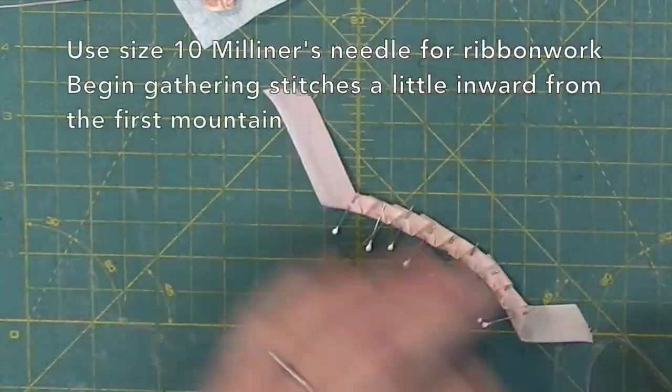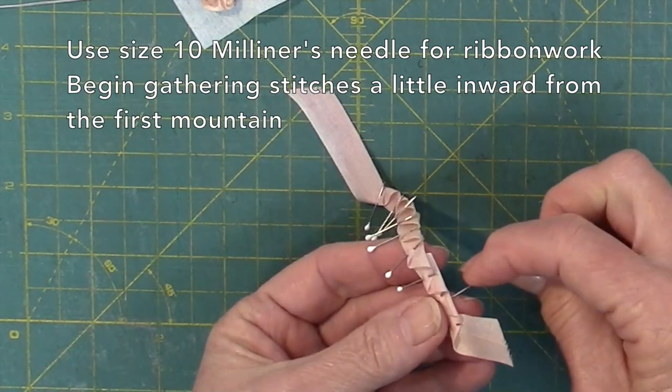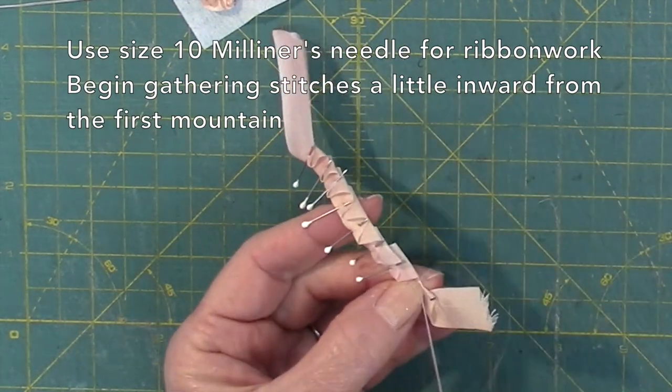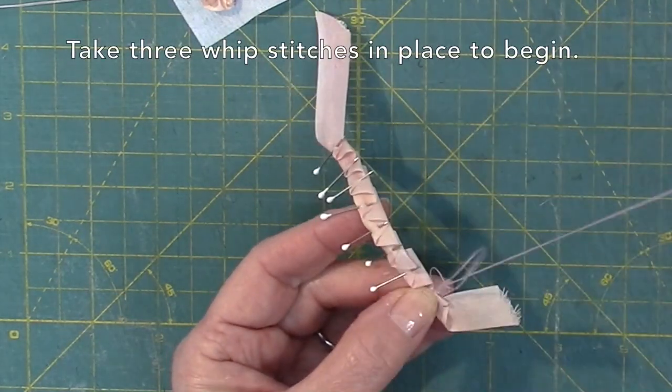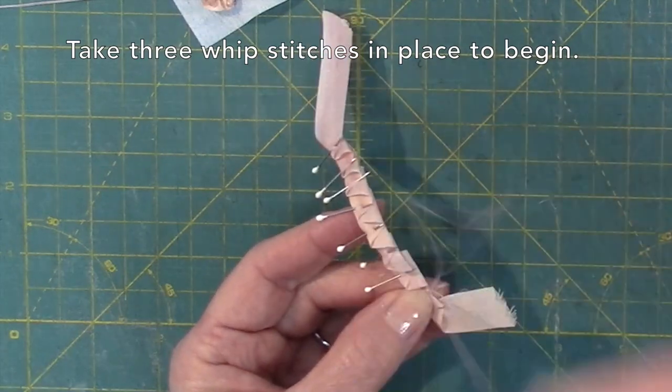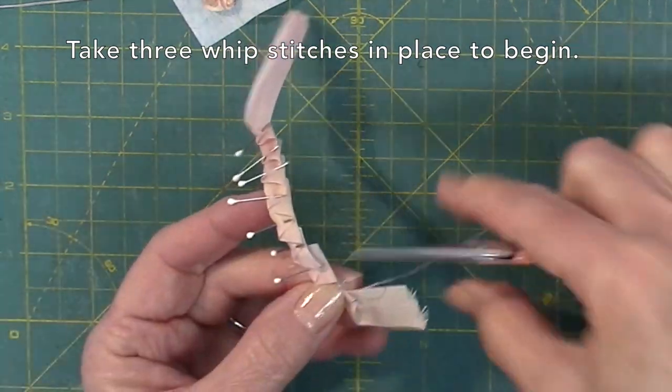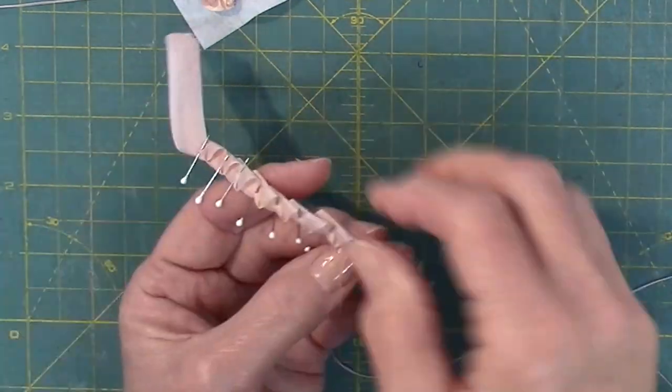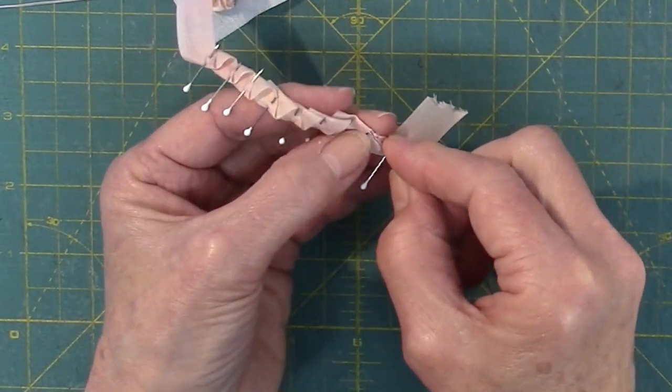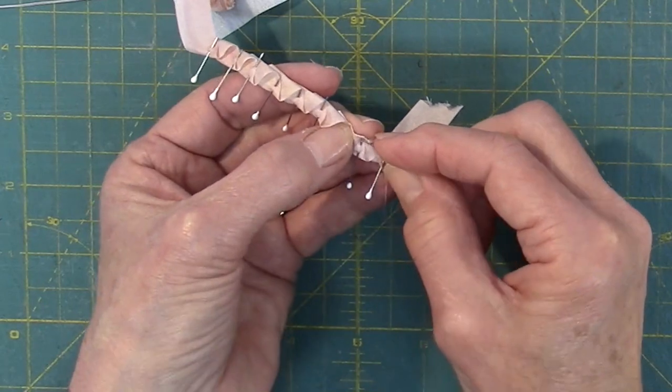Now we're going to gather stitch this, and I'm going to start right here, so I'm not starting at the very beginning. There's no knot on my thread. I'm going to take three little whip stitches in place. So no knots with ribbon work.